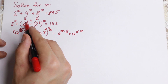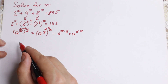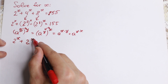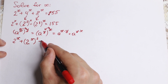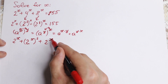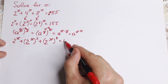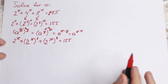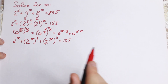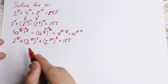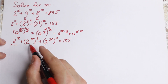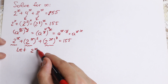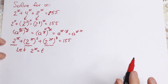Using this rule, we can swap the powers 2 and x, and 3 and x. So we get 2 to the x, plus 2 to the x squared, plus 2 to the x cubed, all equal to 155. Since we now have the same base element 2 to the x appearing in every term, we can introduce the substitution: let t equal 2 to the x.